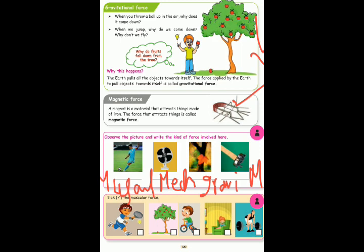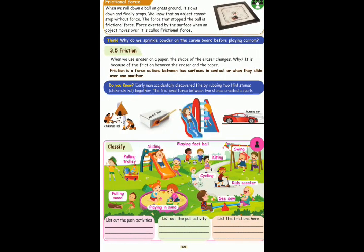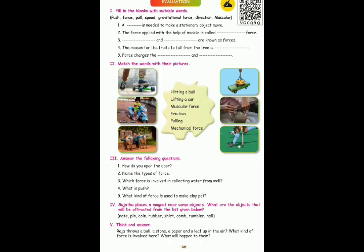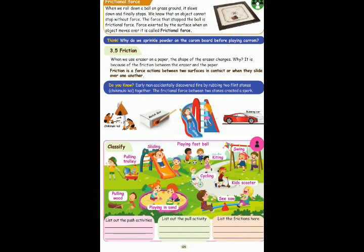Next, take the muscular force. This is the muscular force. First feature is the tennis play — so this is the muscular force. Second feature is the leg. Riding the bicycle by using our legs — so this is the muscular force. Next is the frictional force. Friction means the surfaces of two objects will contact and there will be some energy release.